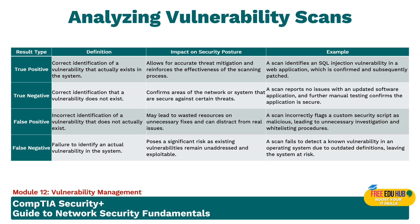A false negative is a failure to identify an actual vulnerability in the system — it is perhaps the most dangerous outcome. It occurs when the scan fails to detect an actual vulnerability, meaning the vulnerability remains in the system undetected and unaddressed, posing significant security risk. False negatives can lead to security breaches if overlooked vulnerabilities are exploited by attackers. An example is a scan failing to detect a known vulnerability in an operating system due to outdated definitions, leaving the system at risk.